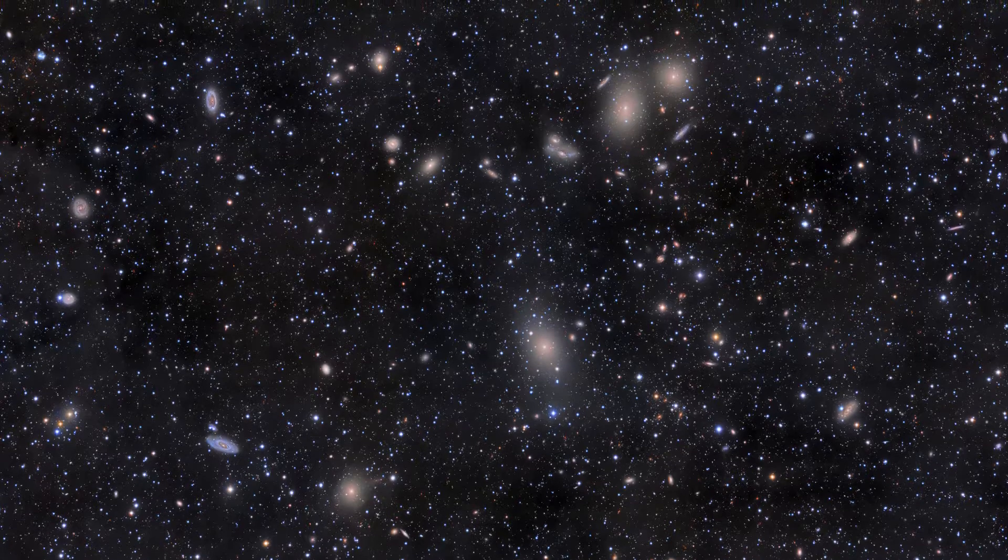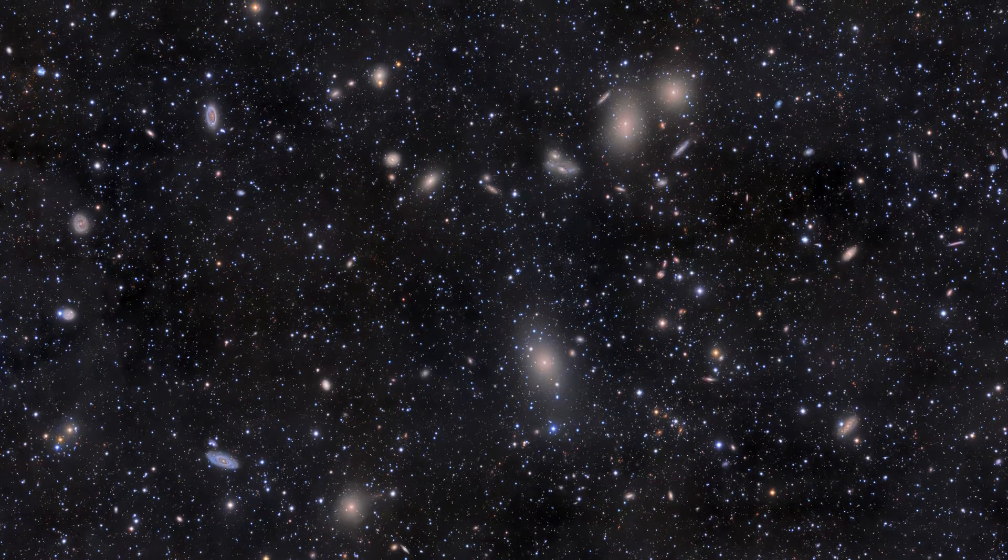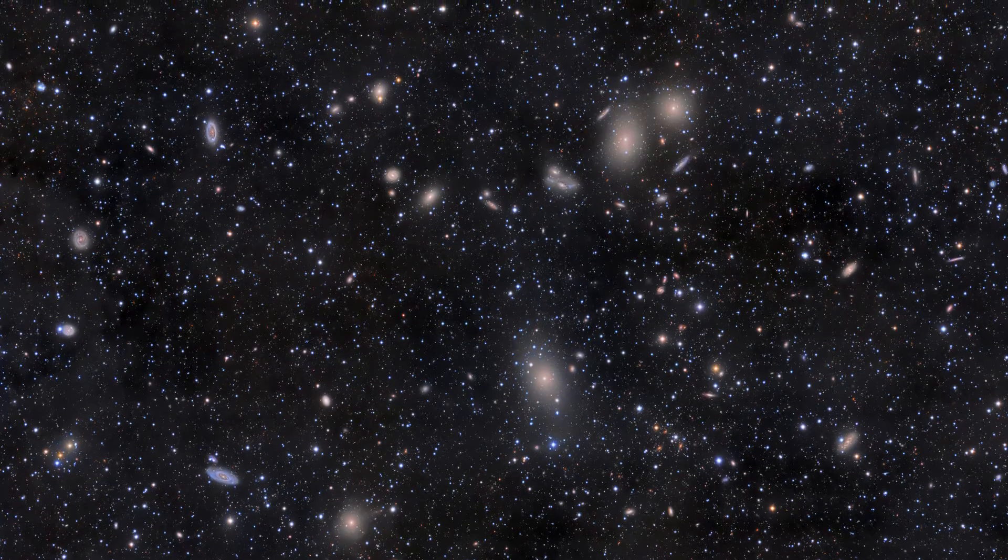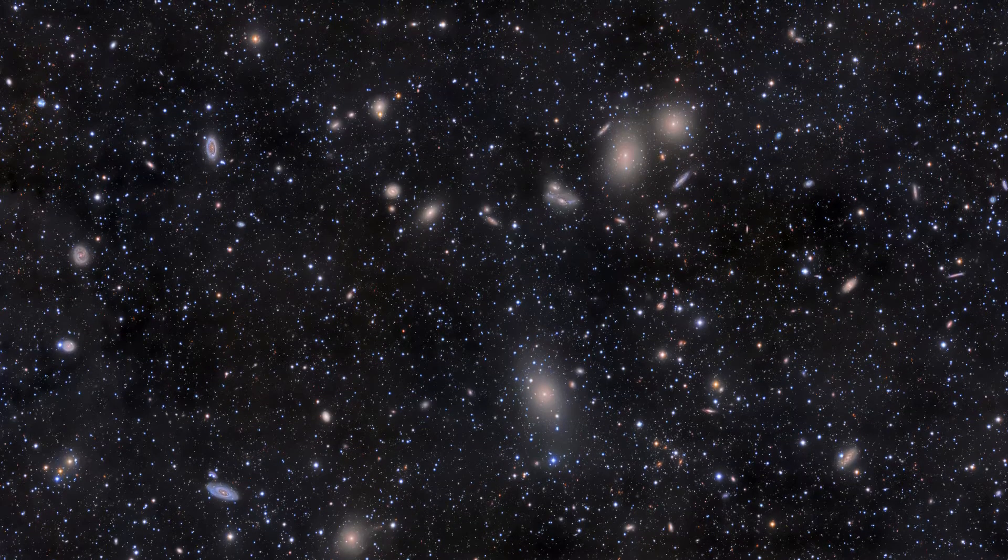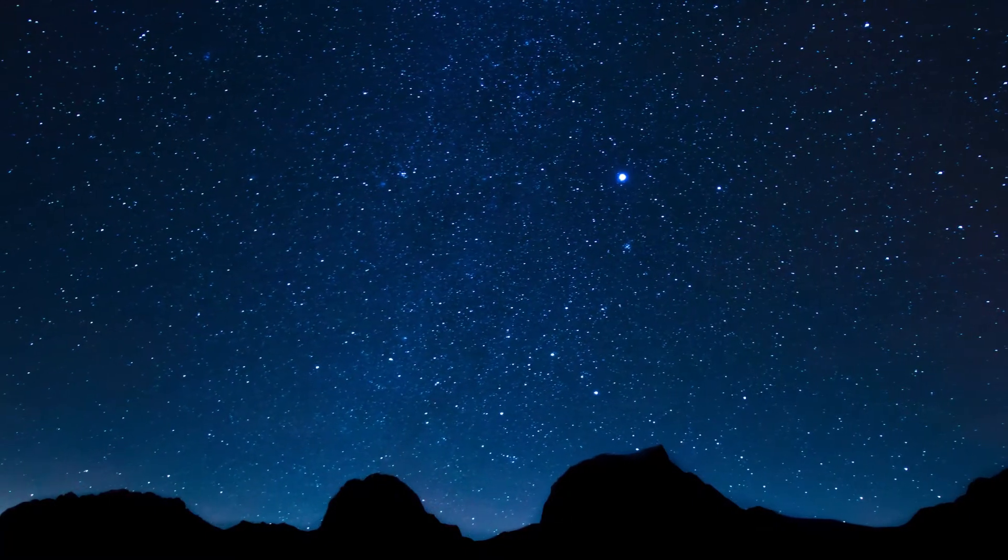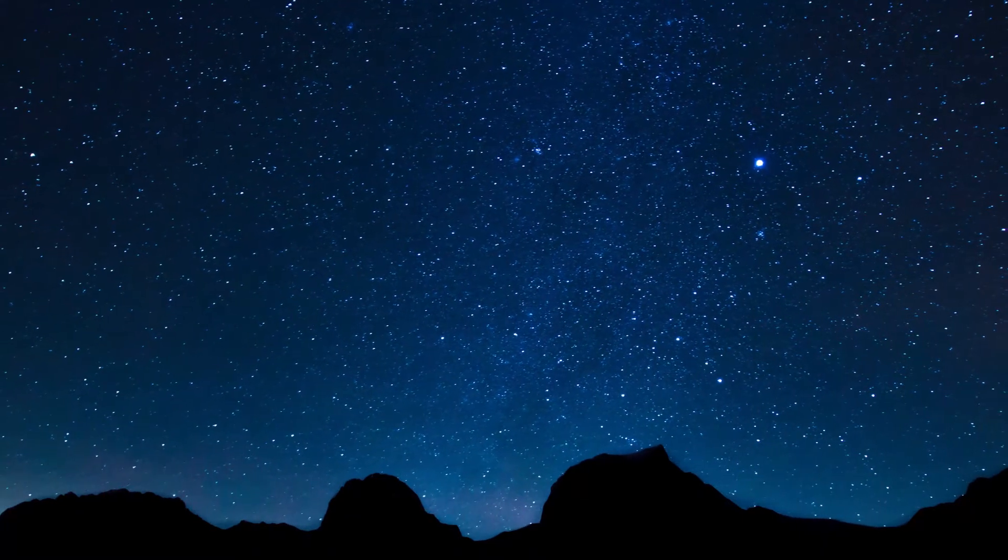The Virgo cluster is the closest large cluster of galaxies to our own local group. Virgo is 7.5 million light-years in radius and about 65 million light-years away.